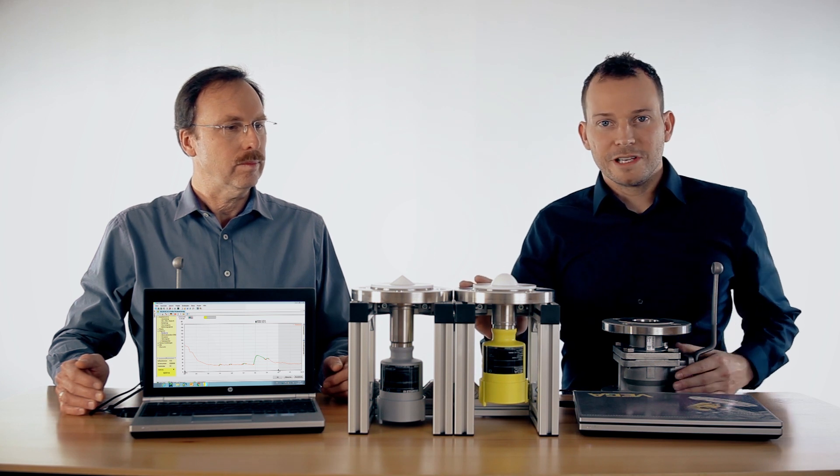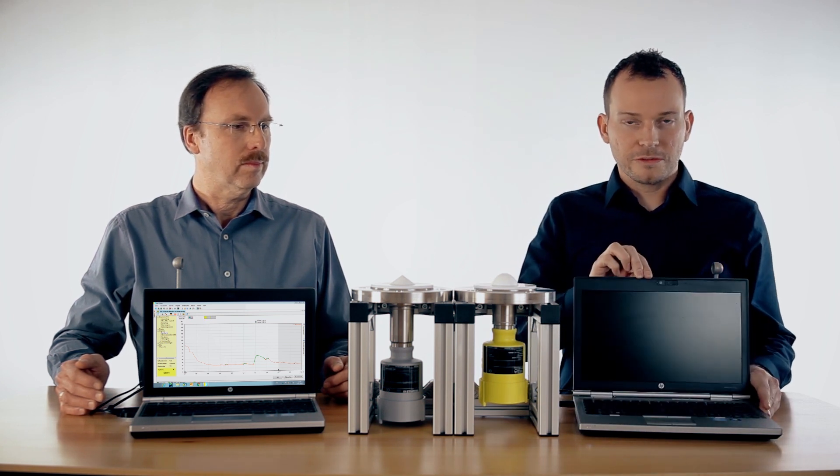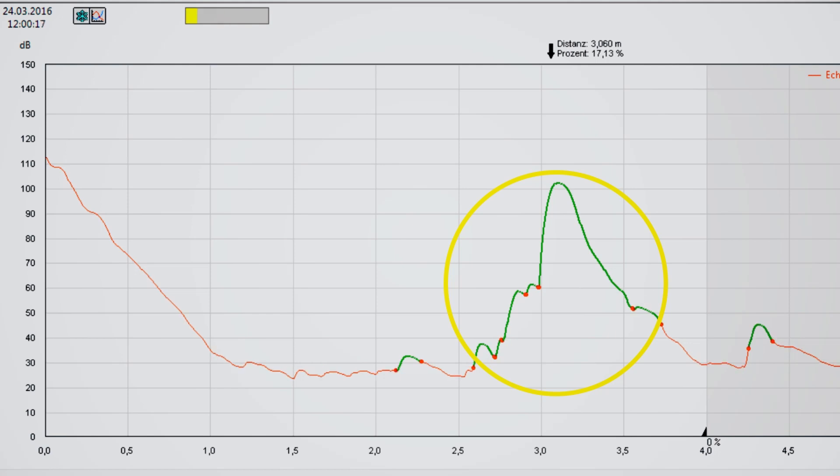The same we have here with the Vega Pulse 64. We are measuring up to the roof and also here we see the echo curve of the sensor.